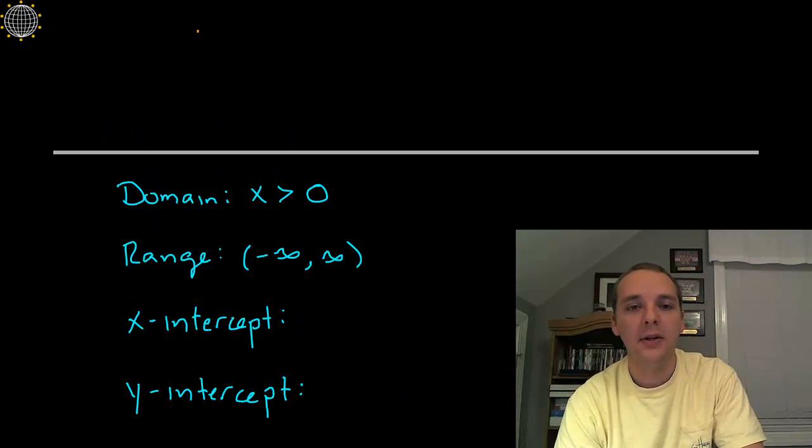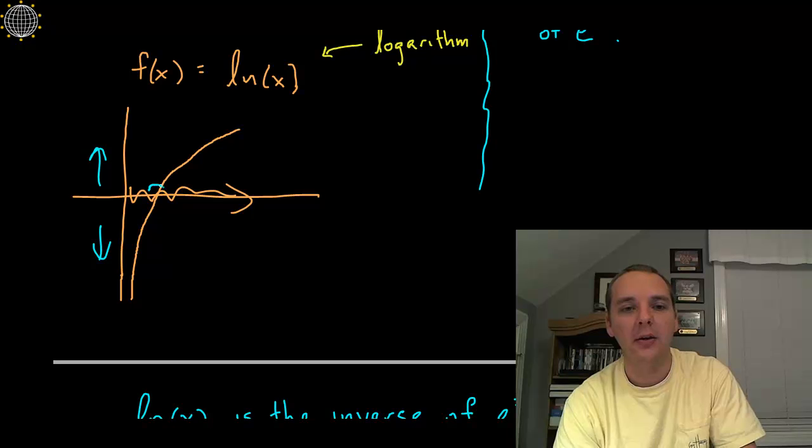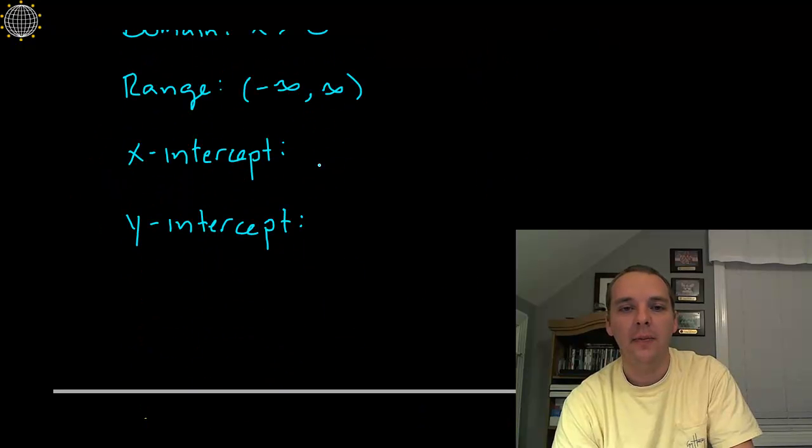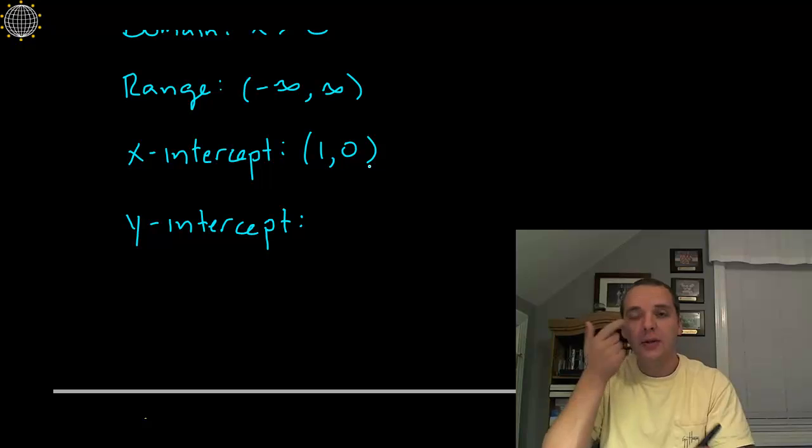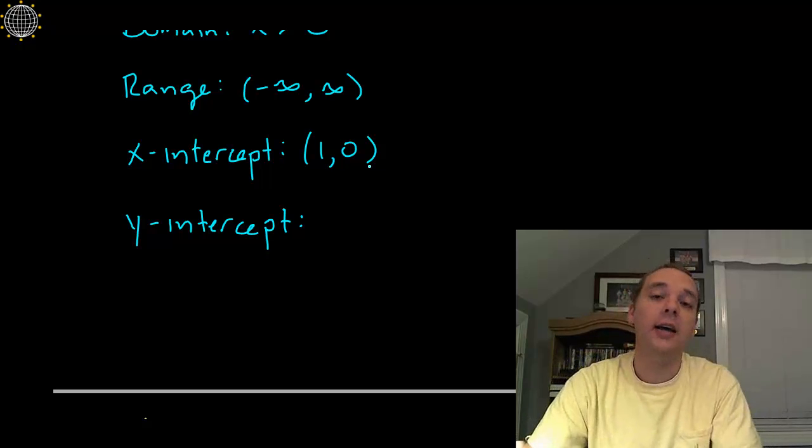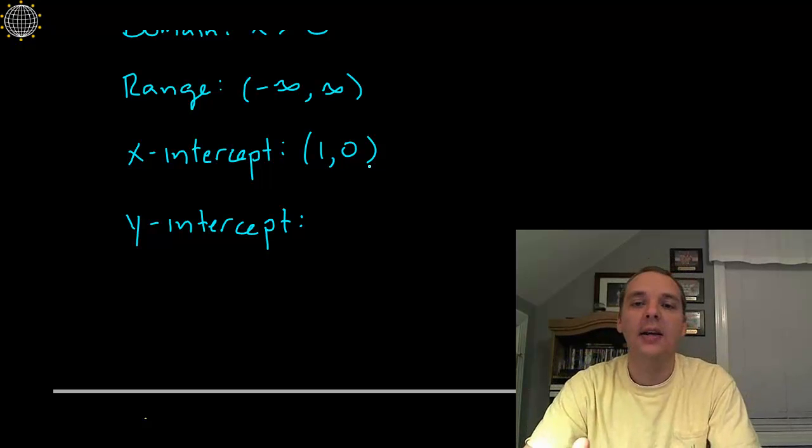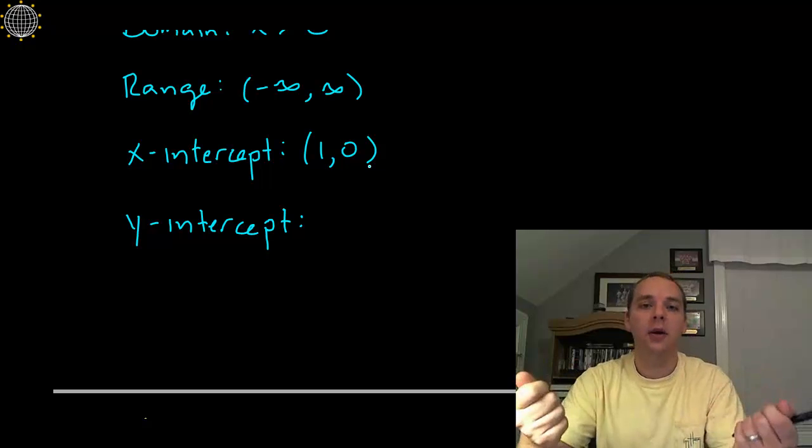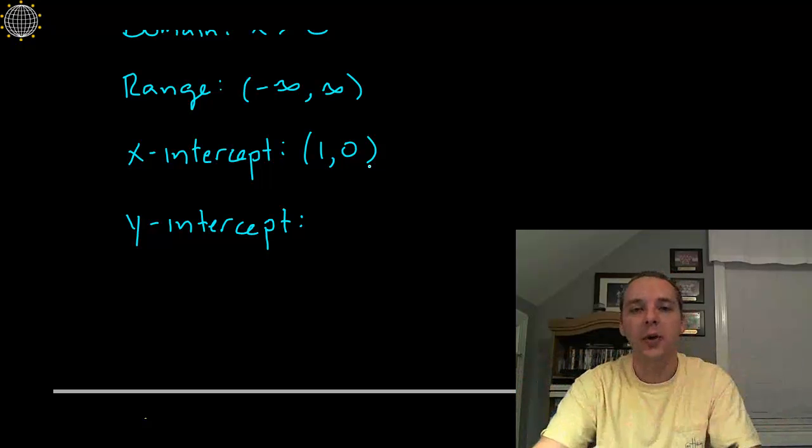The x-intercept: it does have an x-intercept right here. That is the point (1, 0), and there's a reason for that. The reason the x-intercept is (1, 0) is because the exponential function e^x had a y-intercept of (0, 1), as you might remember.